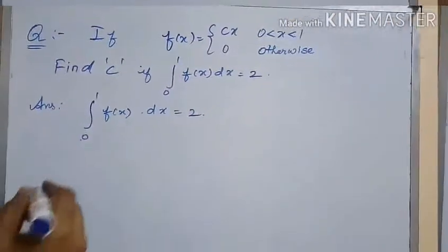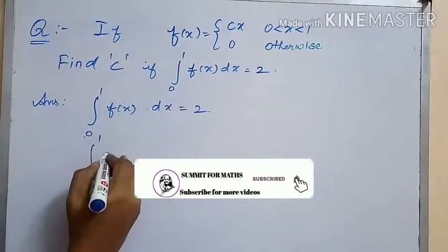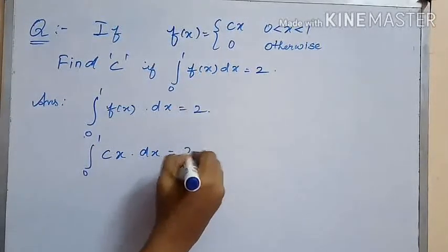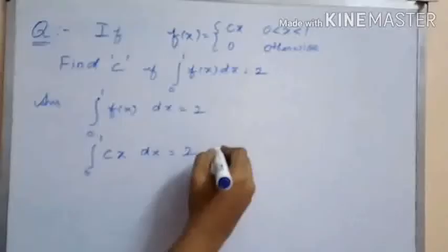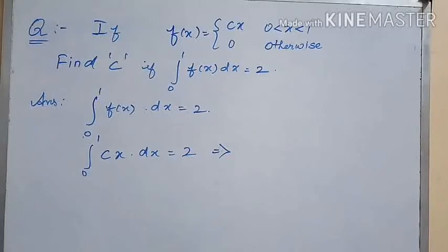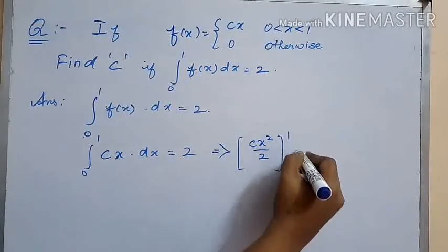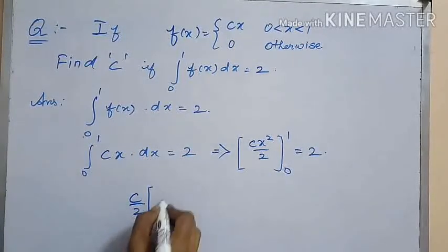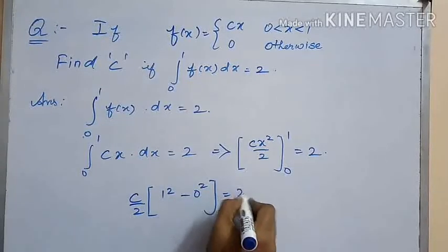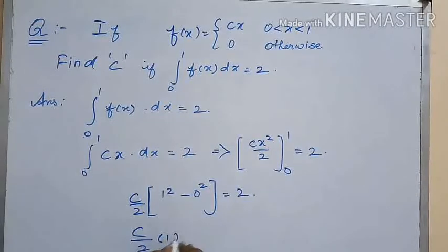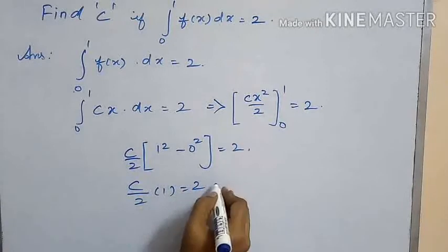The last problem for today's session: if f(x) equals cx when x lies between 0 and 1, and 0 otherwise, find c if the integral from 0 to 1 of f(x) dx equals 2. Substituting, we get the integral from 0 to 1 of cx dx = 2. Integrating gives cx²/2 within the limit 0 to 1, equal to 2. c/2 is constant; substituting limits gives 1² − 0² = 2, so c/2 = 2, therefore c = 4.